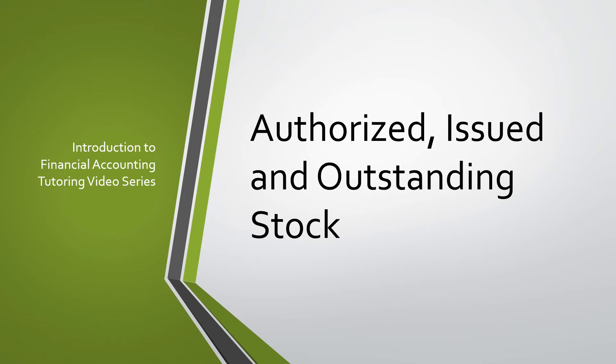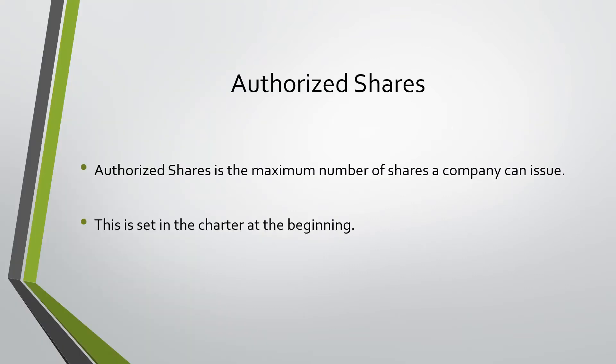Today we will be going over Authorized, Issued, and Outstanding Stockholders. Authorized shares is the maximum number of shares a company can issue. This is set in the charter at the beginning.